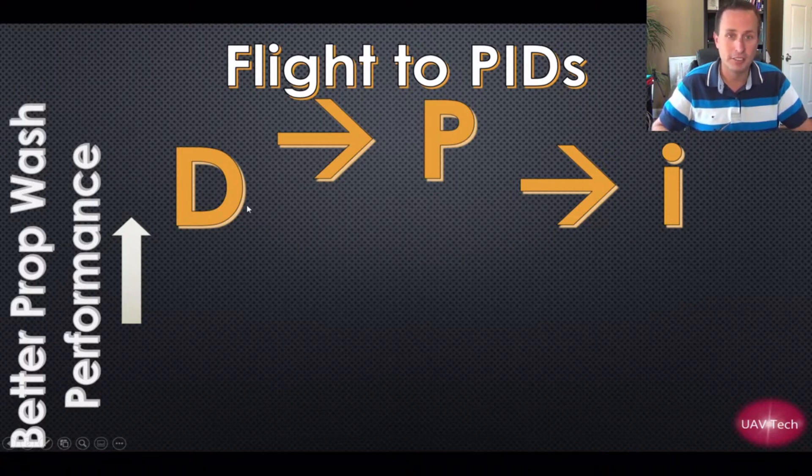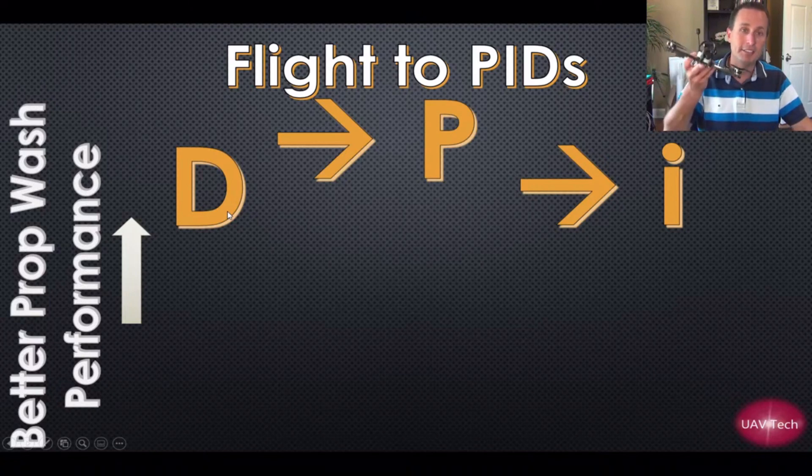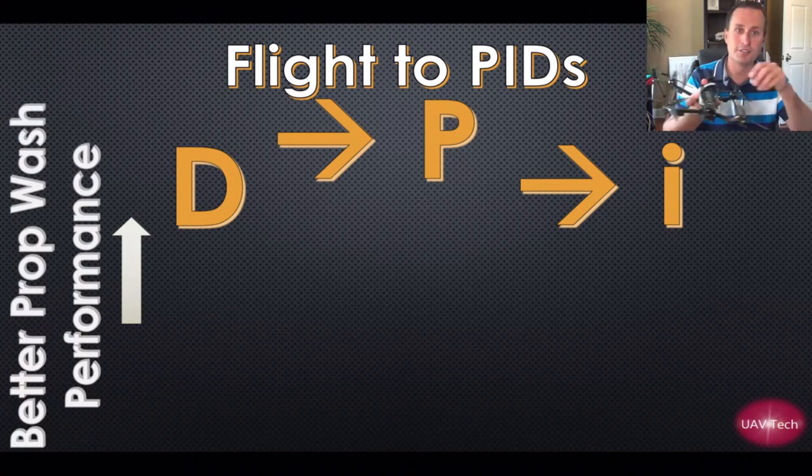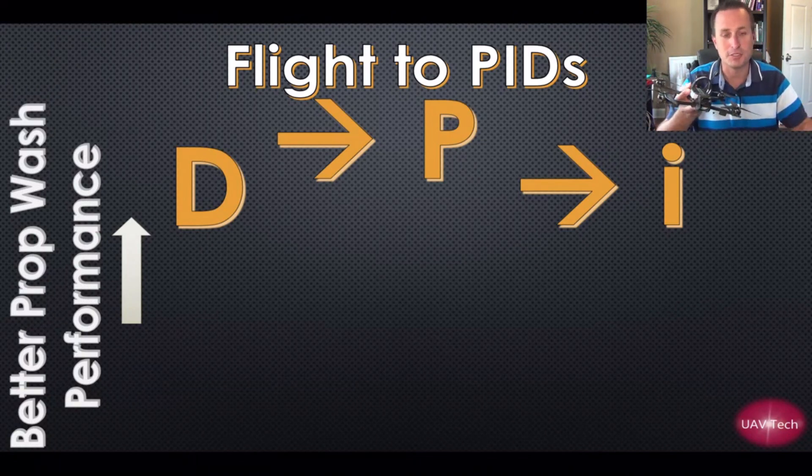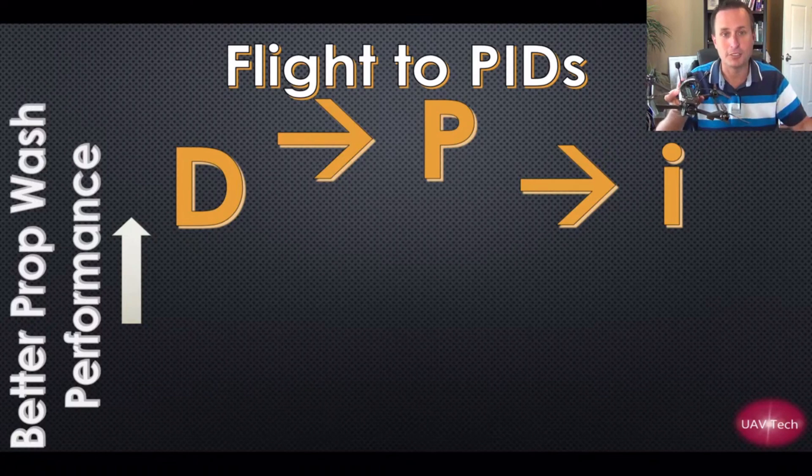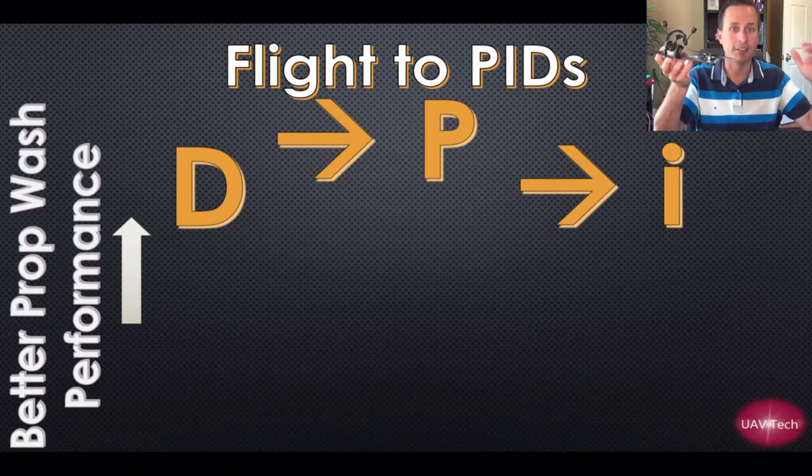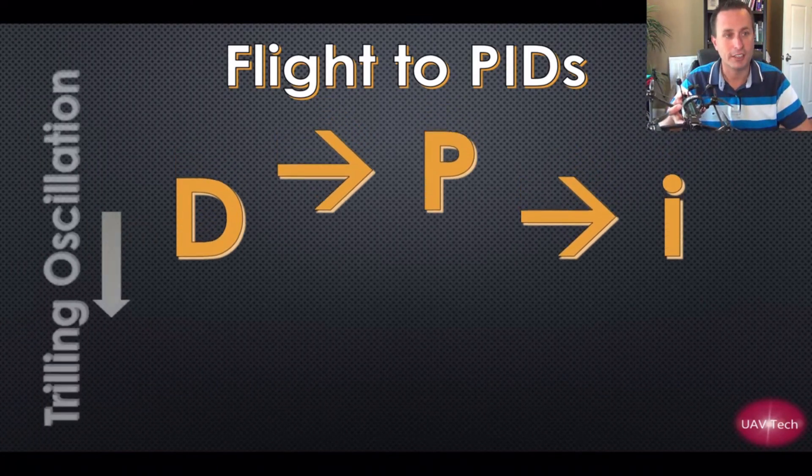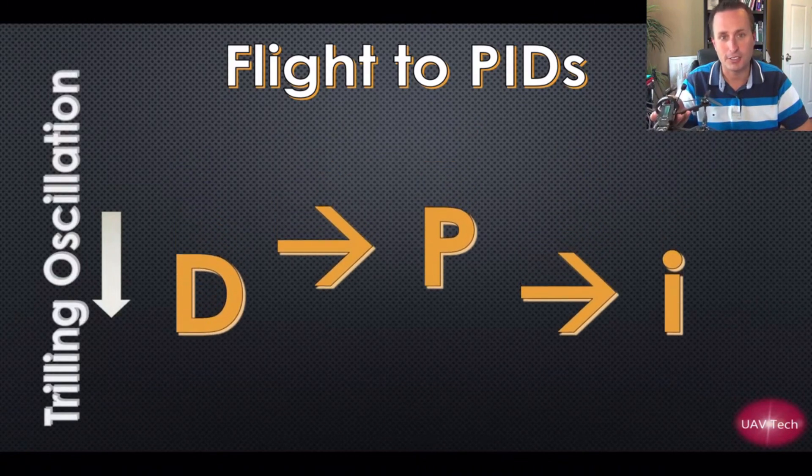If you just raise D and leave P and I alone, because now you're raising D which can help with prop wash performance, but now you're going to make it more sluggish for stick inputs because that D term is fighting your stick inputs. So the only way to do that appropriately without just raising D and then messing up other stuff is you got to raise everything together or lower everything together if you're getting like trilling oscillations or something like that.